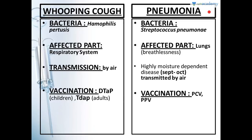Pneumonia is a very commonly heard disease. The bacteria for pneumonia is Streptococcus pneumoniae. The affected part is lungs, and breathlessness takes place — even if a person walks 50 meters, the person will be gasping and unable to catch their breath. The vaccination is PCV and PPV. This is a highly moisture-dependent disease, occurring in September-October, and the pneumonia bacteria is transmitted by air.